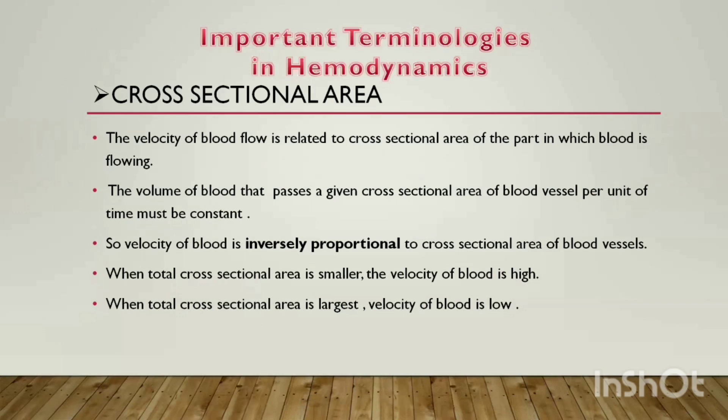First is cross-sectional area. The velocity of blood flow is related to the cross-sectional area of the vessel in which blood is flowing. The volume of blood that passes a given cross-sectional area of blood vessel per unit of time must be constant. So the velocity of blood is inversely proportional to the cross-sectional area of the blood vessel.